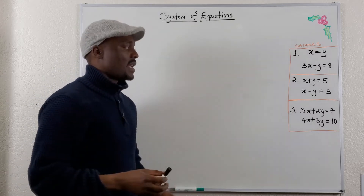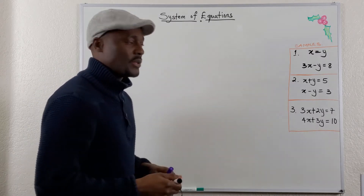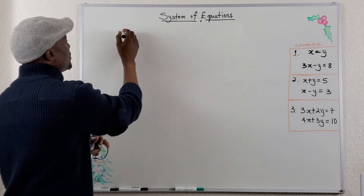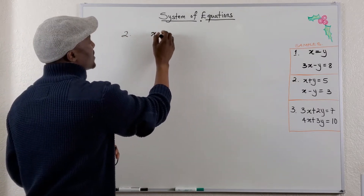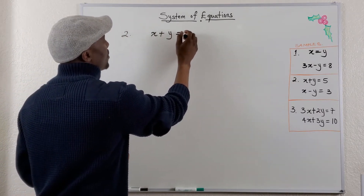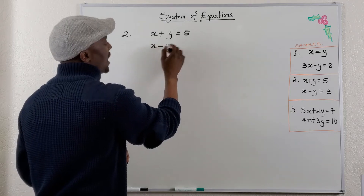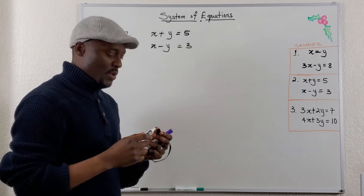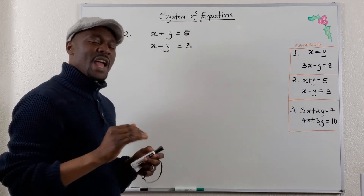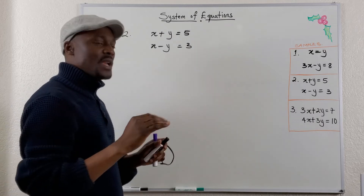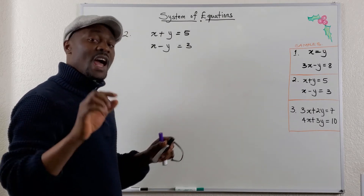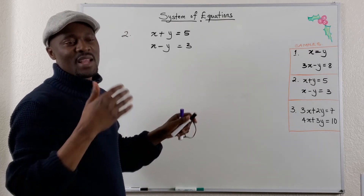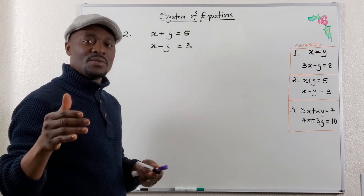In this second example, I used this question when I taught elimination, but we want to use substitution. For number 2, the question is x plus y equals 5, and x minus y equals 3. You have to choose which of the equations you want. My recommendation is: if there's one equation that has a negative, that's the one you should use. Because sometimes the negative sign tends to confuse students.